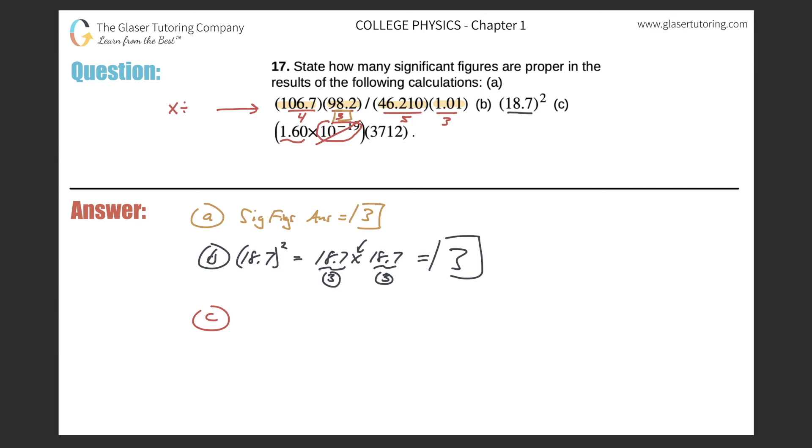So the first number here has three significant figures. The second number here has four. Notice we are doing a multiplication between these two numbers. Therefore, choose the least. So letter C would be three. This answer should have no more than three significant figures.